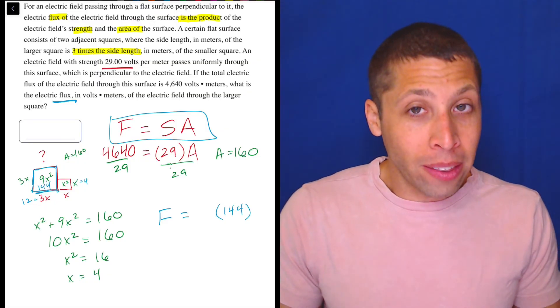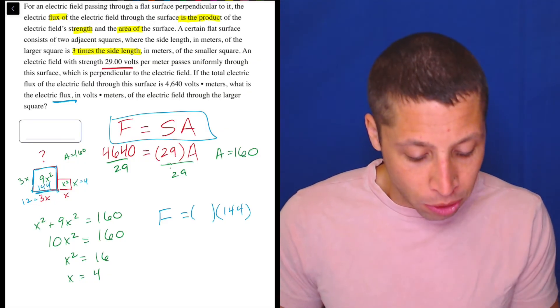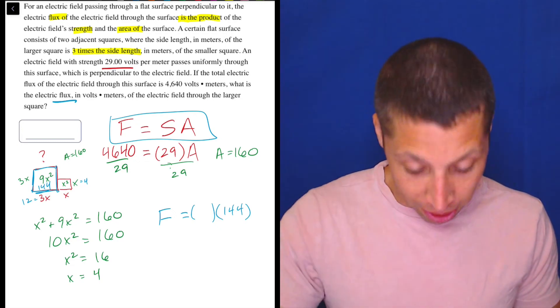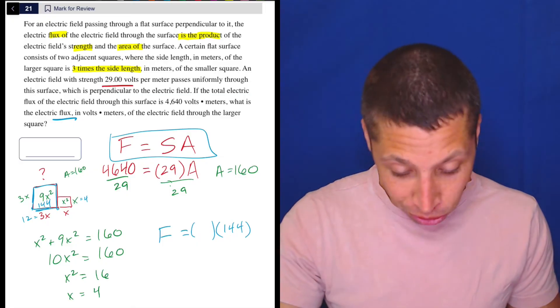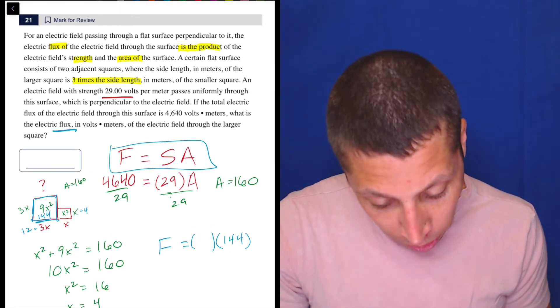Now this is where a lot of people are going to freak out, but it's actually really obvious what to do. We know we need the strength. We've read everything in the question. Did they give us the strength? Well, they did a long time ago. It was the 29.